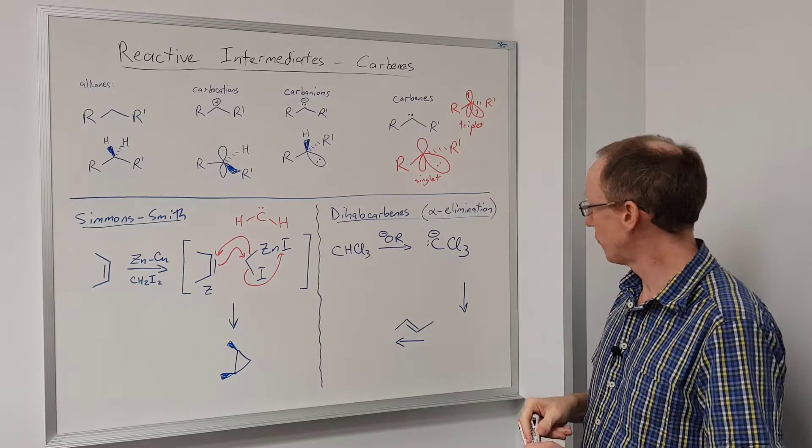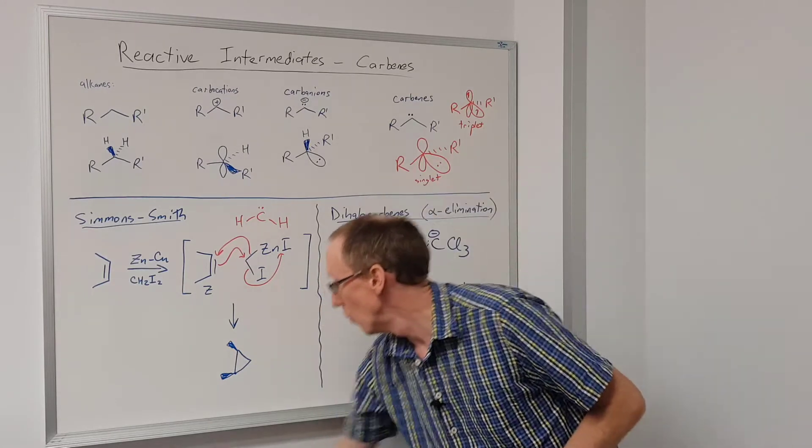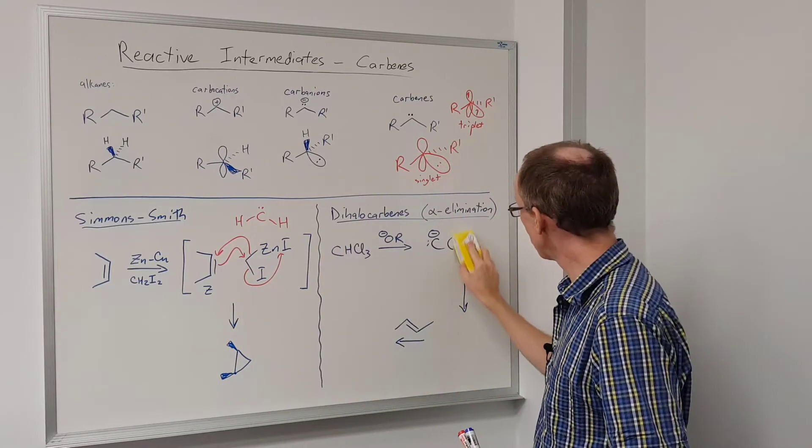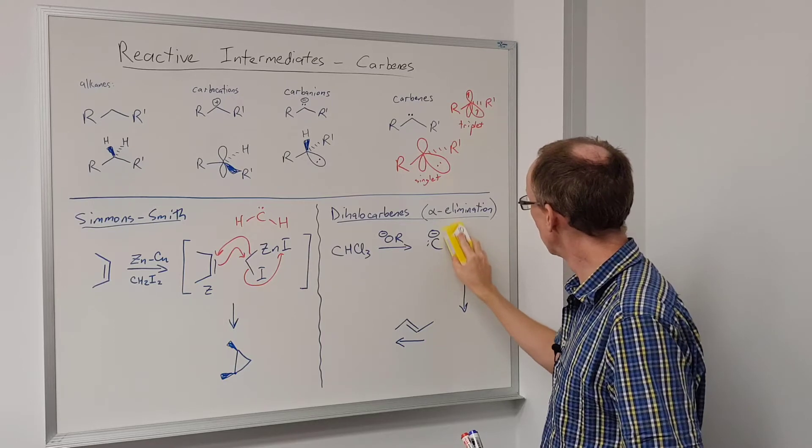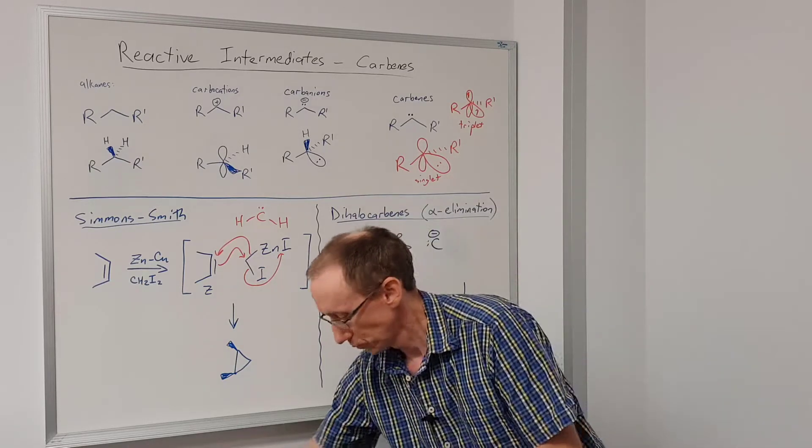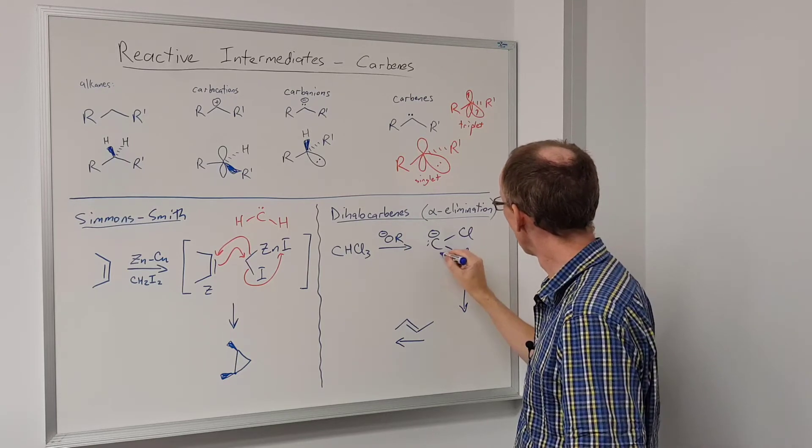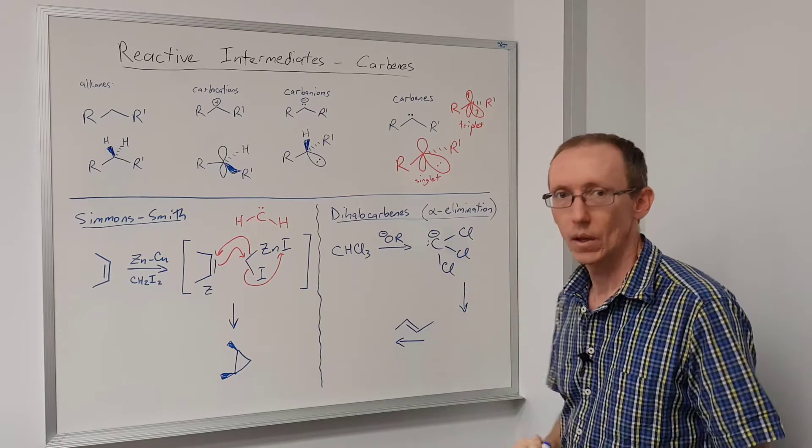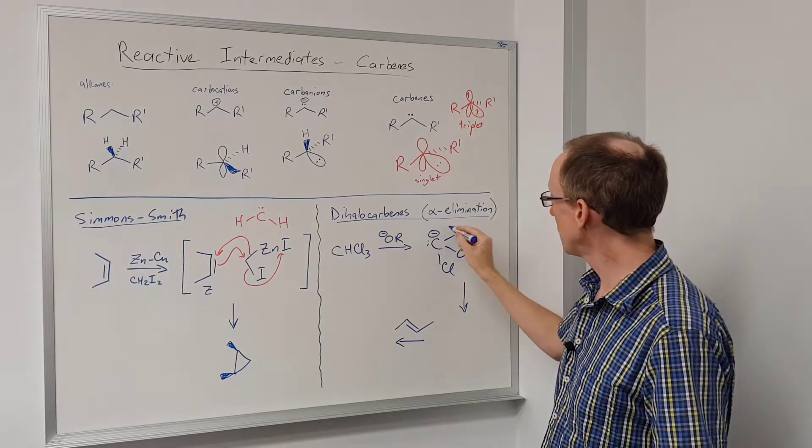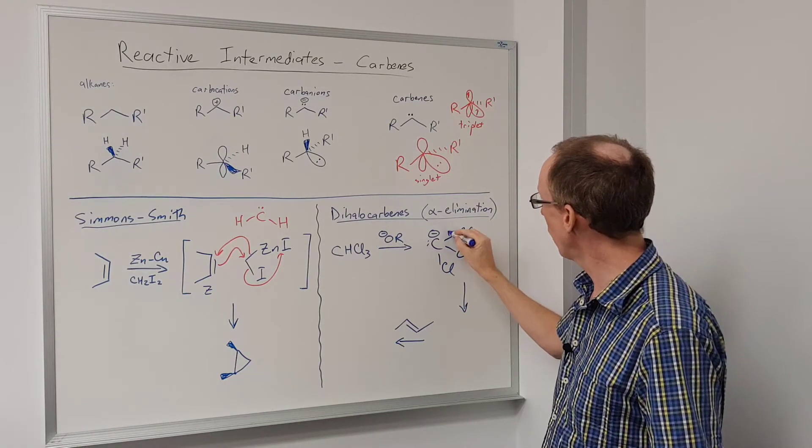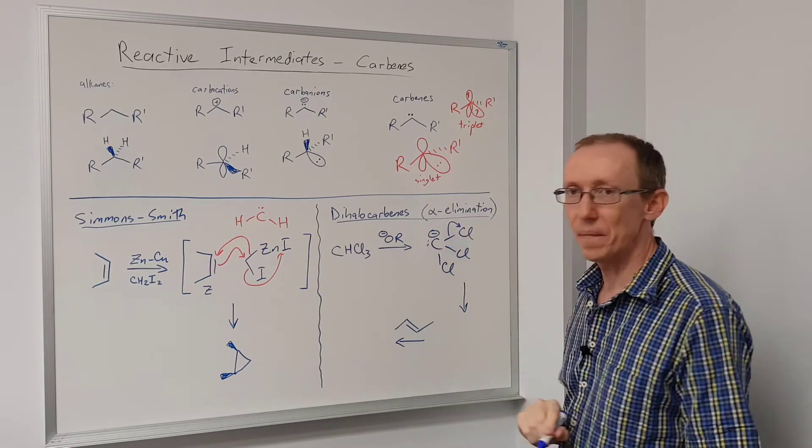I've drawn that out there without showing the bonds to the chlorine. Let's just draw those in. So we're going to get, once we form this anion, we're going to get loss of one of the leaving groups from that carbon.